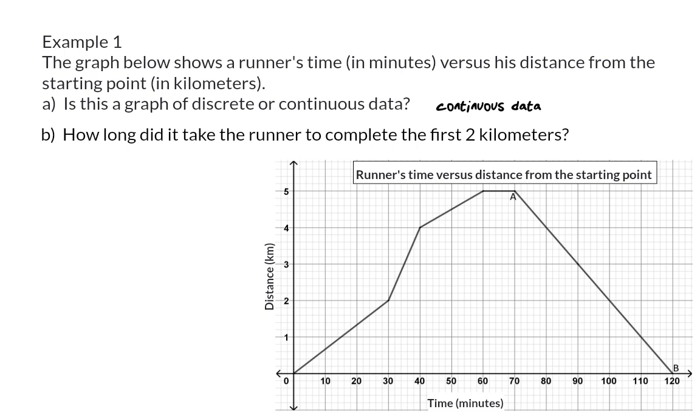Question B: How long did it take the runner to complete the first two kilometers? Remember that a graph shows you the relationship between two variables, in our case, distance and time. Here, we are given that it is about the first two kilometers, so the distance is given, and from our graph, we can then go and read what time it took. And in this case, the answer will be 30 minutes.